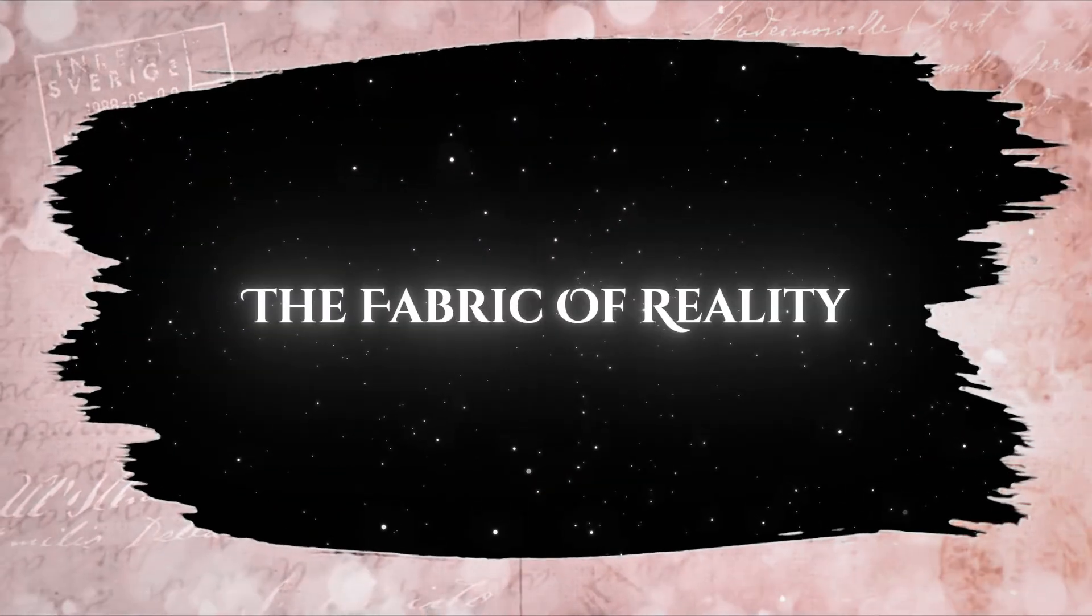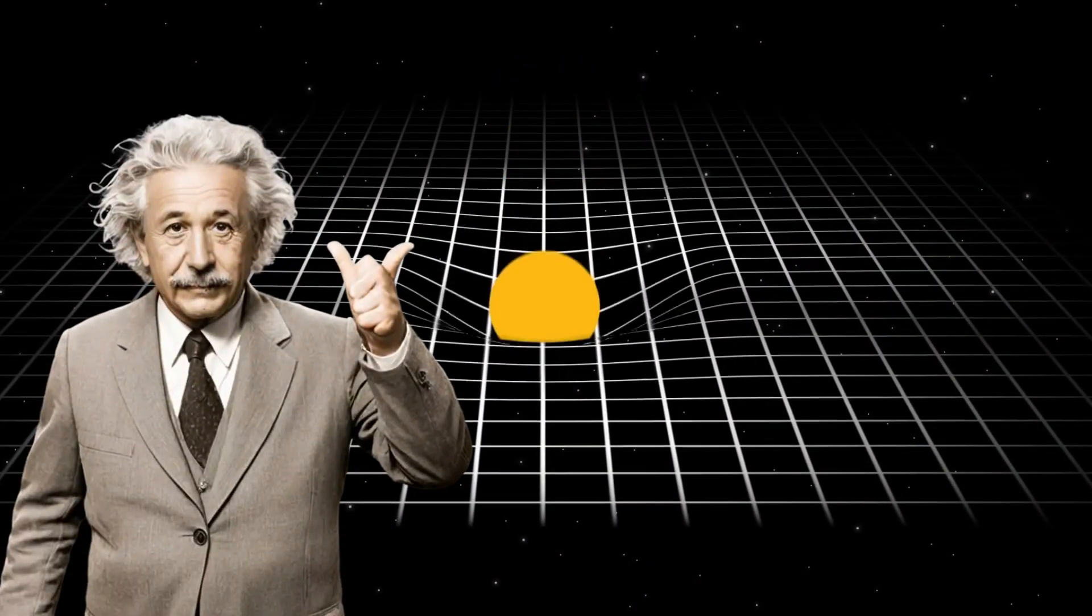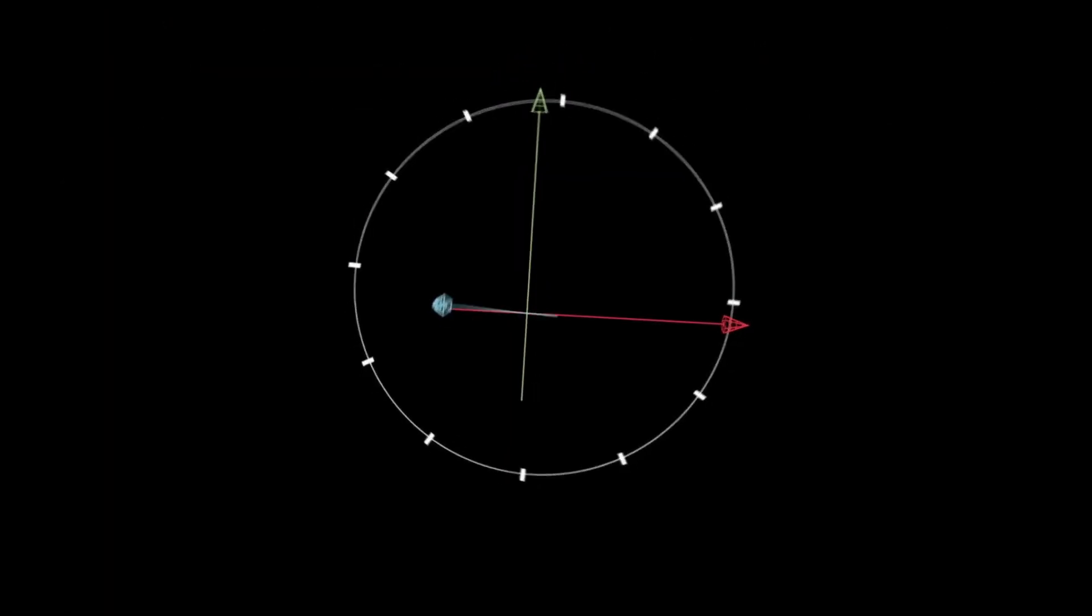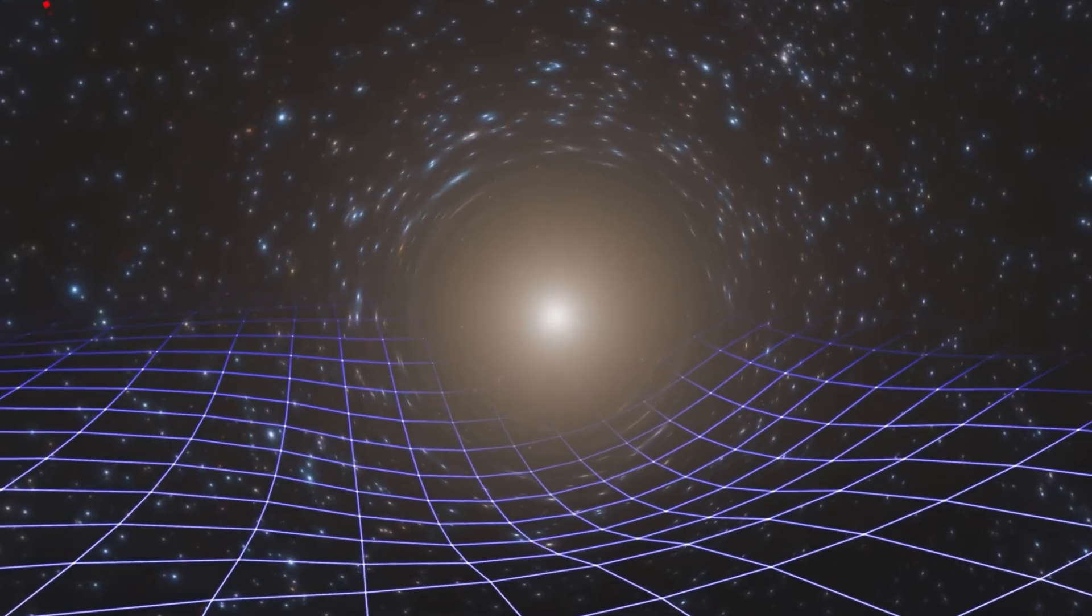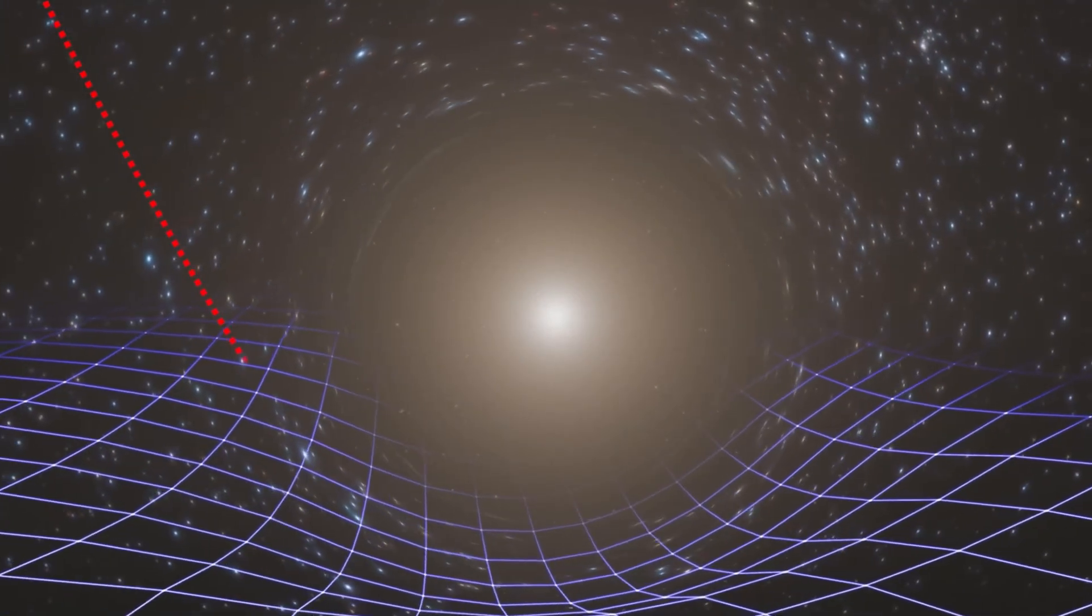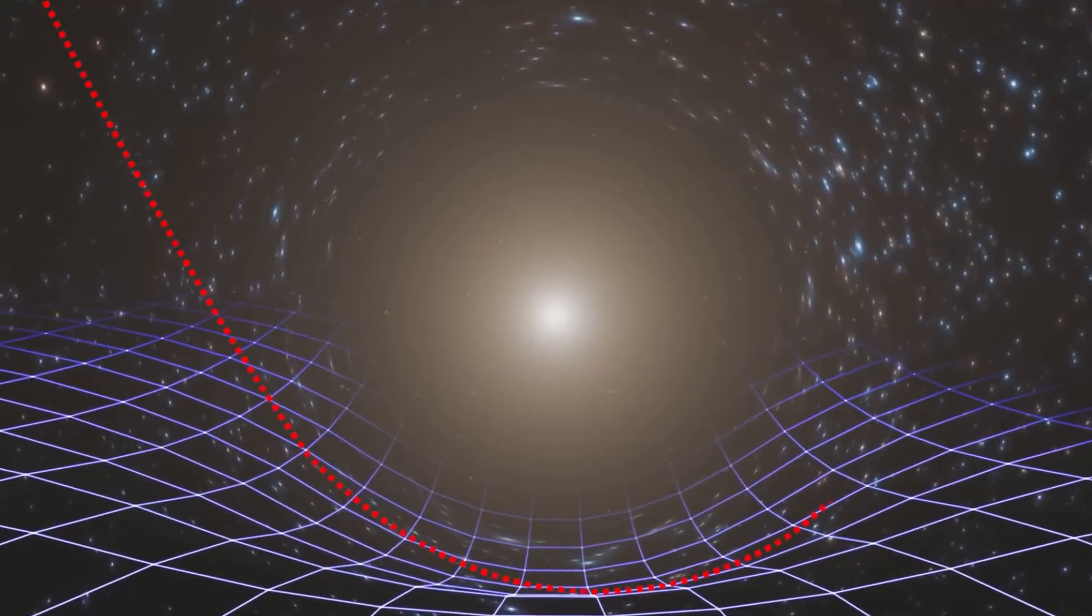The Fabric of Reality. Einstein's theory of general relativity tells us that space and time form a single, flexible fabric, space-time. Mass and energy bend this fabric, and the expansion of the universe stretches it.